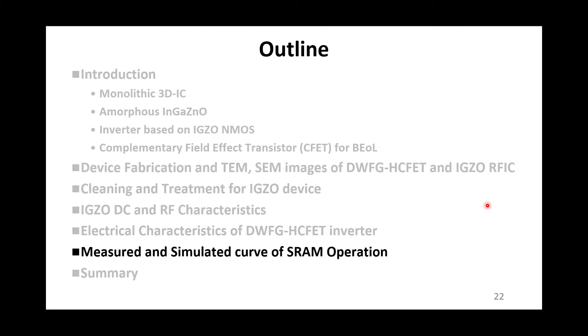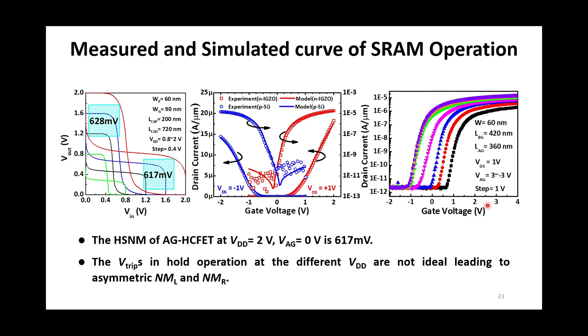Finally, we will discuss the SRAM operation based on AG HC-FET. We would like to demonstrate the stability and adjusted gate functionality. So we measure the butterfly curve of the SRAM based on AG HC-FET without applying adjusted gate voltage, shown in the left figure. The cross-point of butterfly curve is called trip voltage.